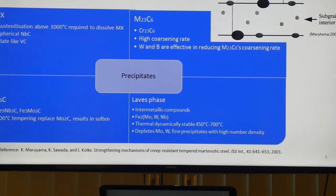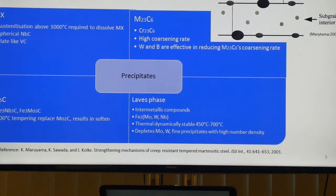M6C is normally niobium-based or molybdenum-based. However, if tempered at around 700°C, it will lead to massive formation of M6C, which is undesirable because it is relatively soft and will result in softening of the steel.